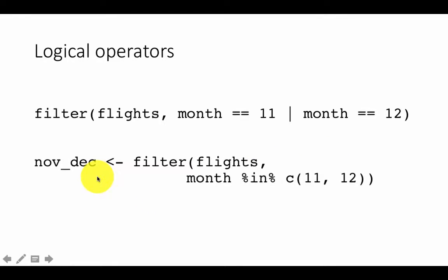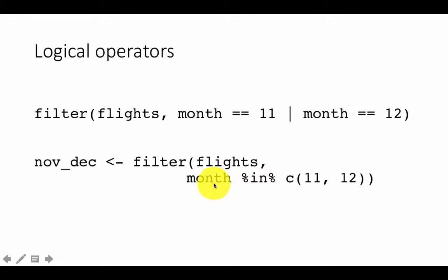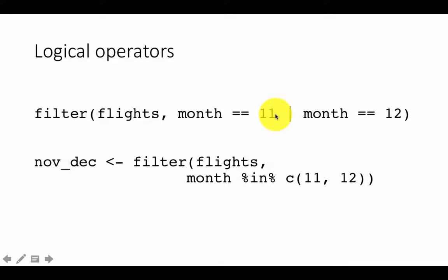We could assign the results to november_december, or alternately, instead of saying month equals 11 or month equals 12, you could say month %in% c(11, 12). The %in% operator is placed between two percentage signs. That is another convenience operator to avoid too many OR conditions — both of these are equivalent in terms of results.